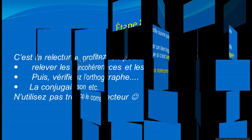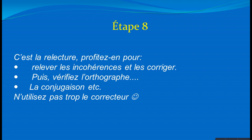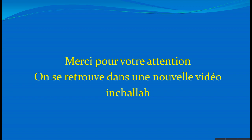La dernière étape, c'est la relecture. Il faut relire sa production et relever les incohérences oubliées : les s, les x, la conjugaison — surtout avec la troisième personne du pluriel, où les élèves oublient souvent le -ent au présent, le -aient à l'imparfait, etc. Merci pour votre attention. N'oubliez pas de nous encourager en mettant un j'aime et en partageant avec vos amis qui ont le régional cette année — cette vidéo va leur servir à grand chose. Merci beaucoup.